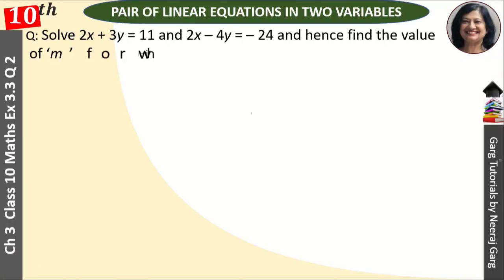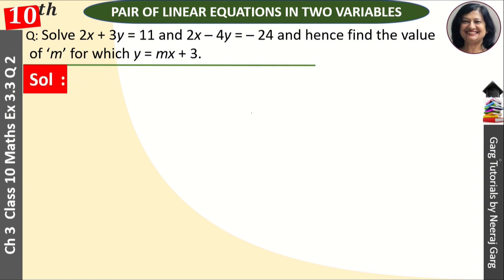Hi, this is Neeraj Garg and you are watching class 10th chapter 3, pair of linear equations in two variables, exercise 3.3 question number 2. Solve 2x plus 3y is equal to 11 and 2x minus 4y is equal to minus 24, and hence find the value of m for which y is equal to mx plus 3.